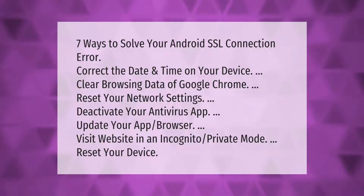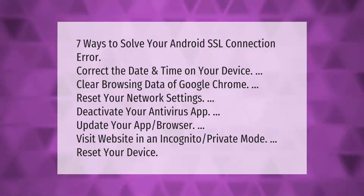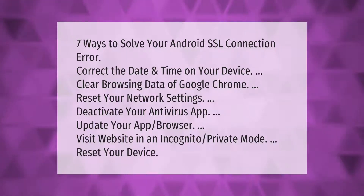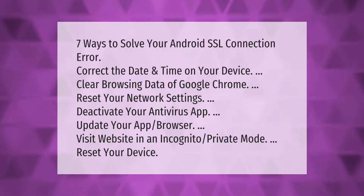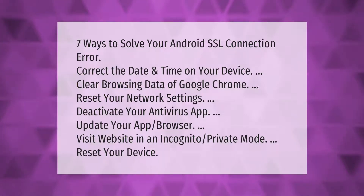Seven ways to solve your Android SSL connection error: correct the date and time on your device, clear browsing data of Google Chrome, reset your network settings, deactivate your antivirus app, update your app or browser, visit the website in an incognito or private mode, and reset your device.